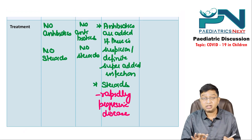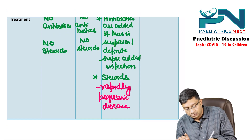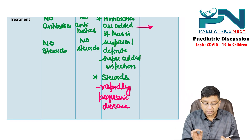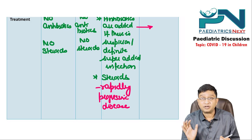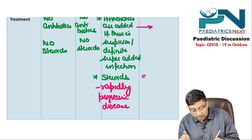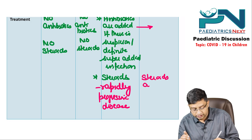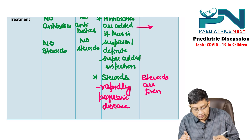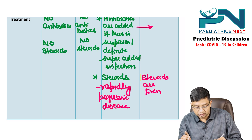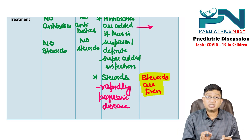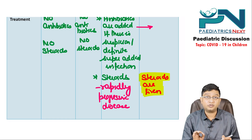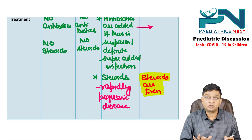In severe cases, antibiotic guidelines remain the same — only if there is suspicion or definite super-added bacterial infection. Steroids are given in severe COVID-19 in children, which is the clear guideline indication for steroid use.